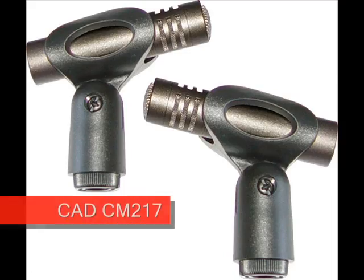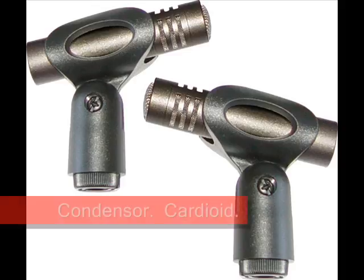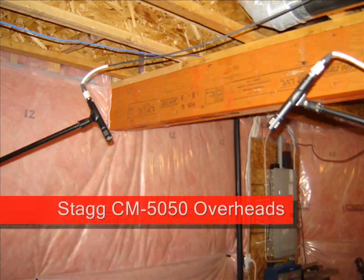For cymbals and overheads I'm using the CAD CM217 — a cardioid condenser microphone. The frequency response is quite flat from about 50 Hz all the way up to 10 kHz, and it also picks up up to around 14–15 kHz, giving you the bright sound of the cymbals.